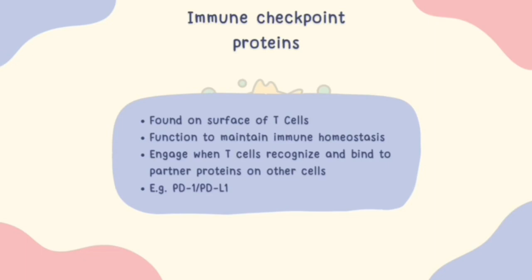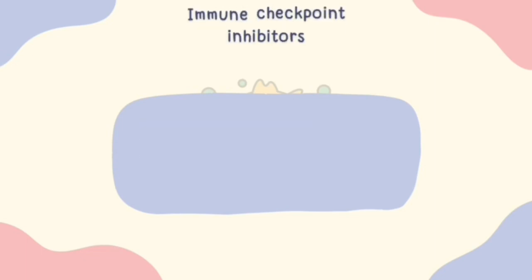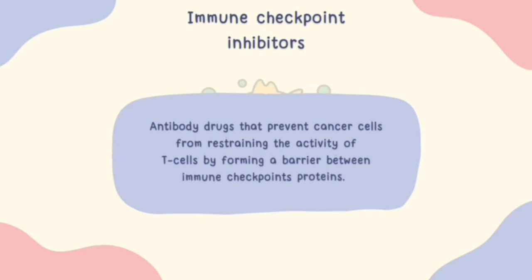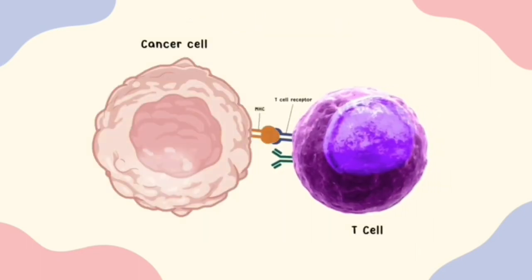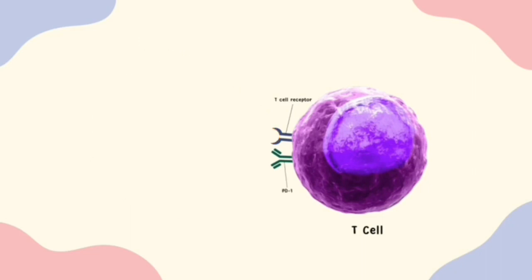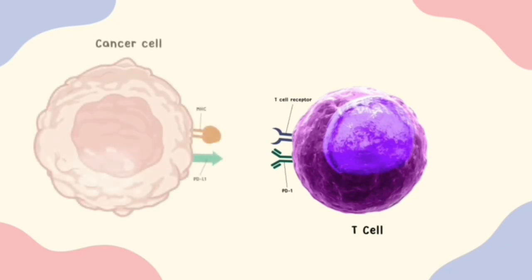Examples of immune checkpoint proteins include PD-1 and its ligand PD-L1, which engage when T-cells recognize and bind to partner proteins. Immune checkpoint inhibitors are antibody drugs that prevent cancer cells from restraining the activity of T-cells by forming a barrier between the immune checkpoints. In the tumor microenvironment, TME, infiltrated activated T-cells recognize cancer cells through the interaction between the T-cell receptor and major histocompatibility complex. T-cells then release cytokines to destroy the cancer cells. PD-L1 is normally found on certain healthy cells where it acts as a brake to stop T-cells from attacking healthy cells.